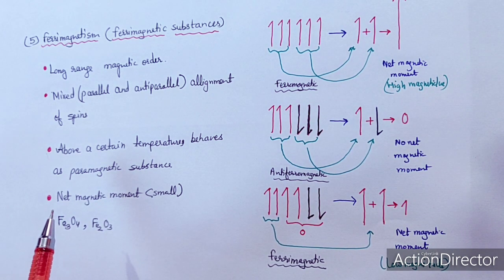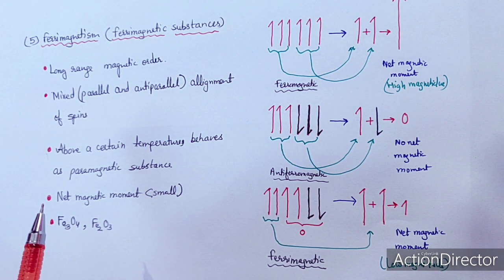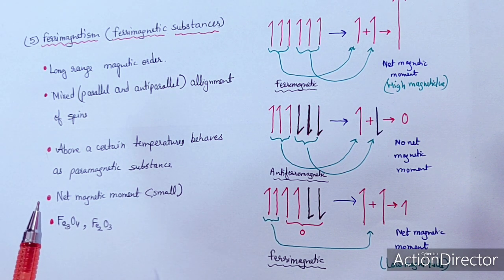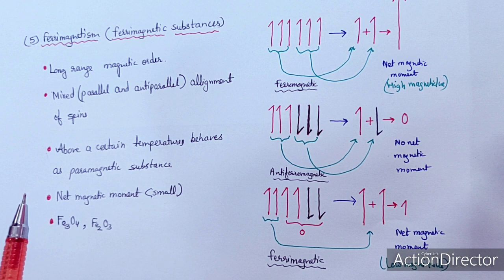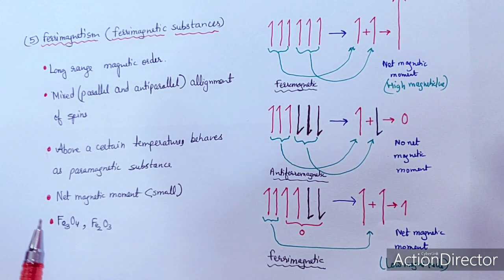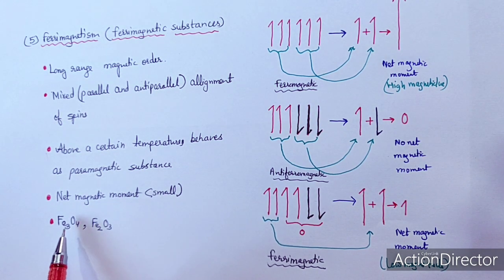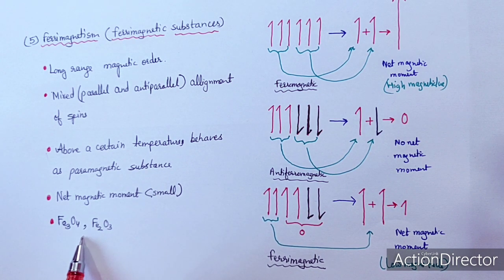Examples of ferrimagnetic materials are iron oxides such as Fe₃O₄ or Fe₂O₃. Examples of antiferromagnetic materials are manganese oxide, cobalt oxide, nickel oxide, and chromium oxide — they are also oxides and sometimes sulfides.